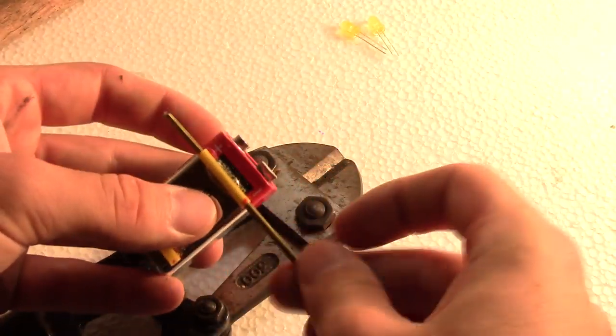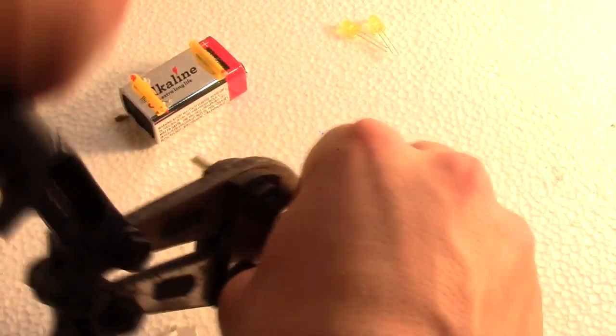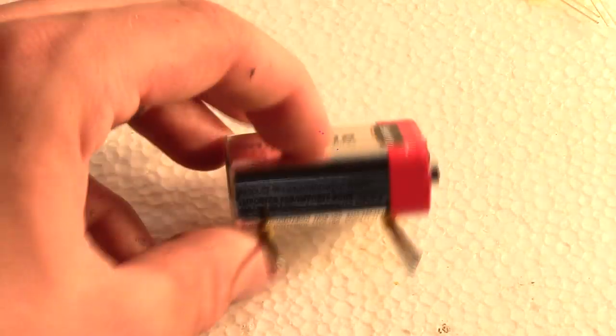Next grab your piece of coat hanger or any other thick wire and cut two lengths that extend outside the straw length by about half an inch on each side. This will be the axle that the wheels rotate on.